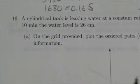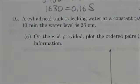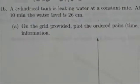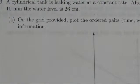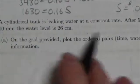Okay everybody, a cylindrical tank is leaking water at a constant rate. After five minutes the water level is 61 centimeters and after 10 minutes the water level is 26 centimeters. So on the grid provided, plot the ordered pairs time and water level, and join them to represent the information. Now in this case, just like with a lot of the questions that we've done, time makes sense for time to be the independent variable.